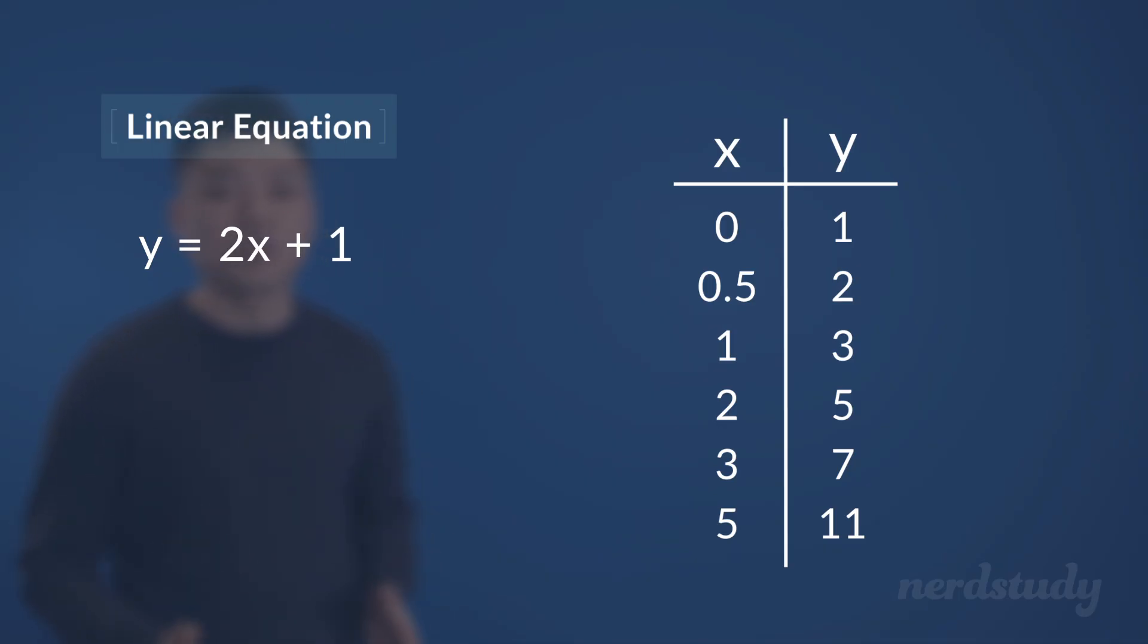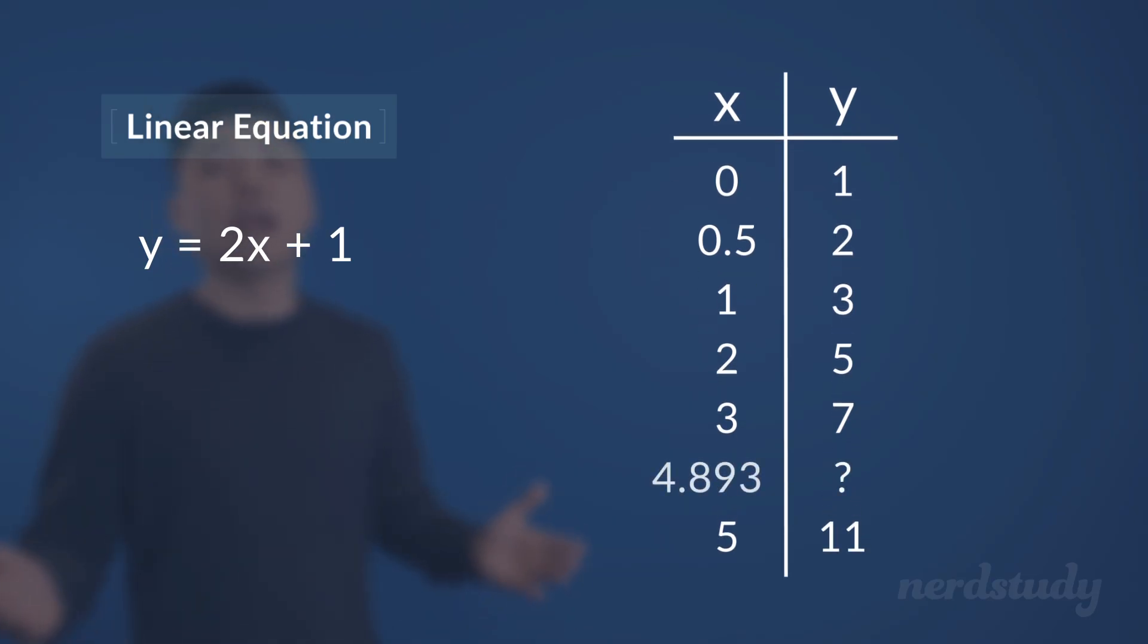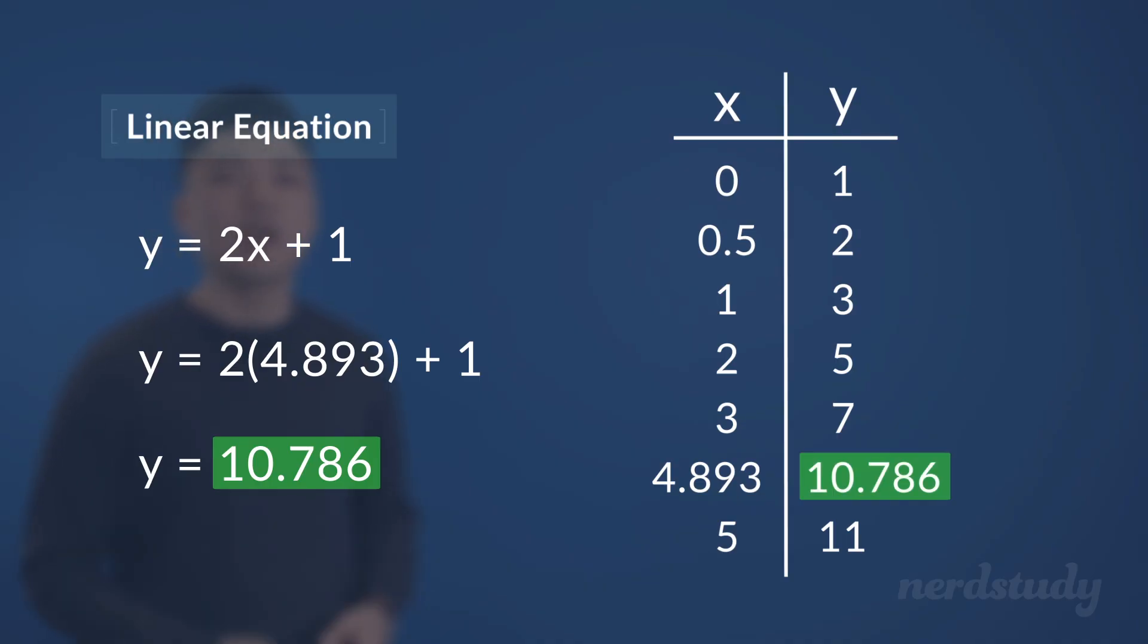Again, this table does not have the y value written out for 4.893, a completely random x value that we could have thought of just right now. But we can always use the more informative equation to find the value of y when x is equal to 4.893. Thus, when we plug it in and simplify, we get 10.786 as our y value.